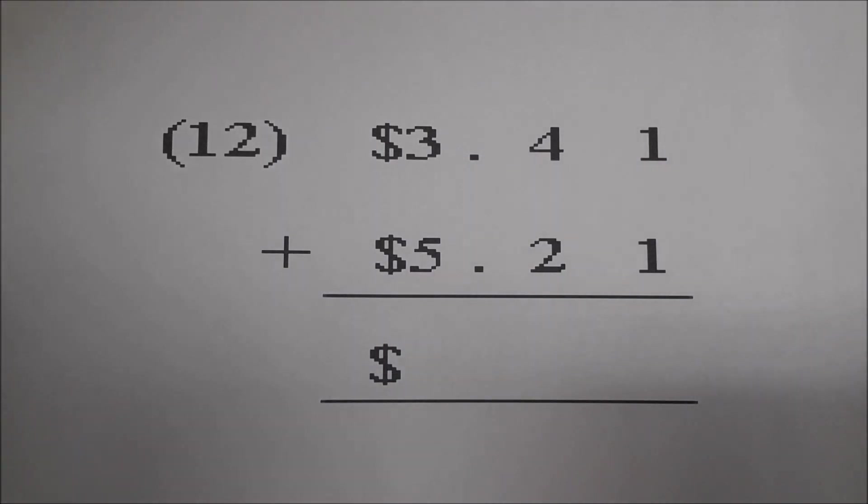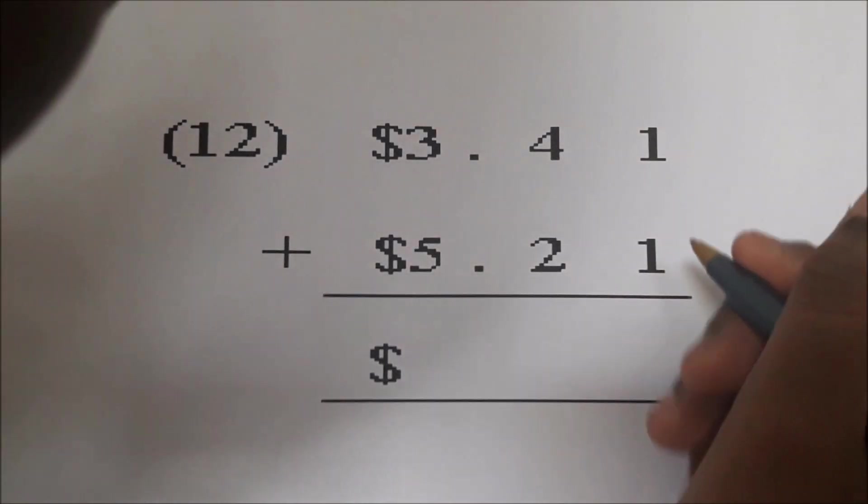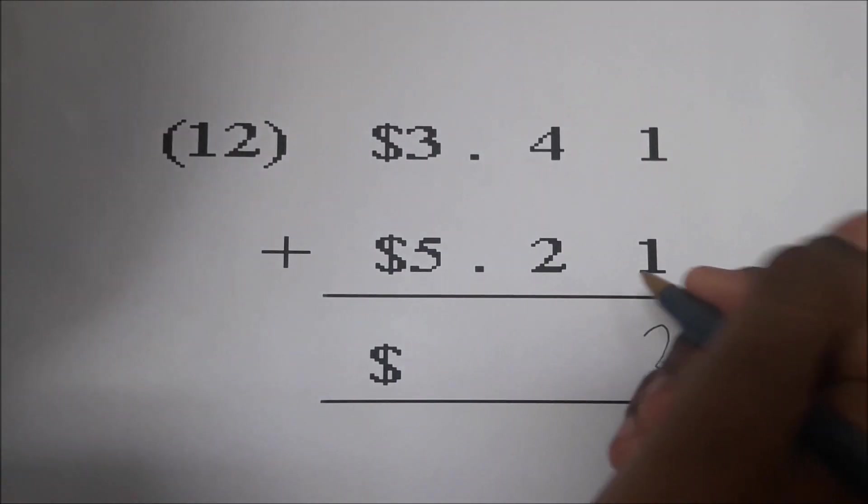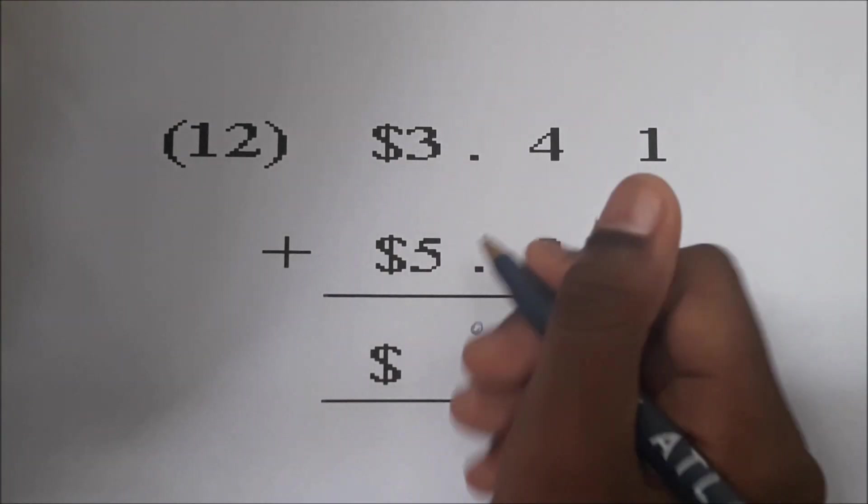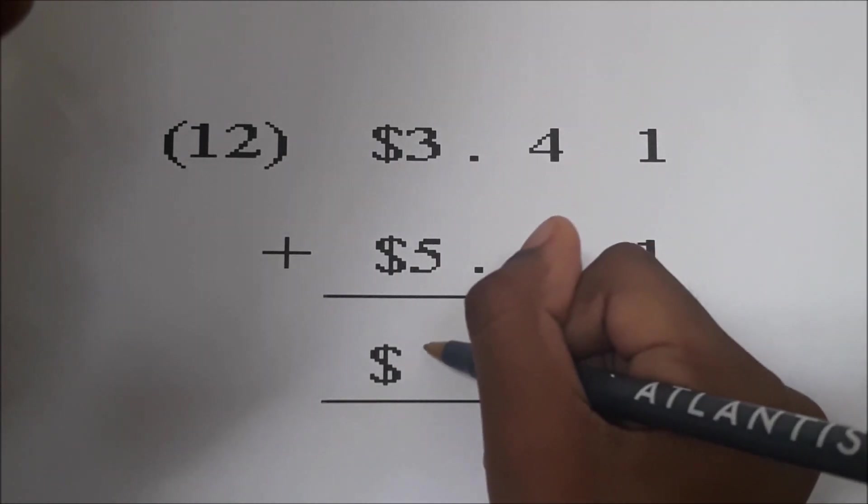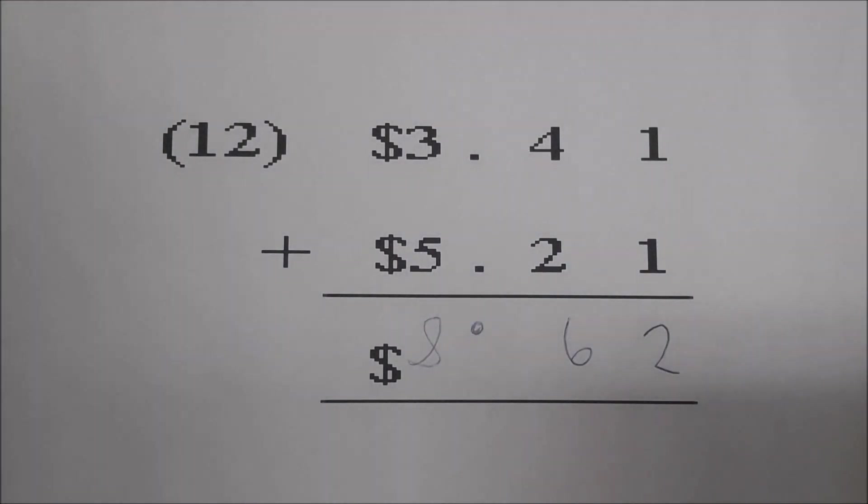Number twelve. Sky, what are you doing? Three dollars and forty-one cents add five dollars and twenty-one cents. Excellent. Go ahead and work it. Tell us what you're doing. One add one is two. Four add two is six. Put the decimal down. Three add five is eight. Answer. Eight dollars and sixty-two cents. Very good. Notice you put the point under the point. You cannot leave it out. Okay, so remember to always put the point in or else it would be wrong. Eight dollars and sixty-two cents. Excellent job, Sky.